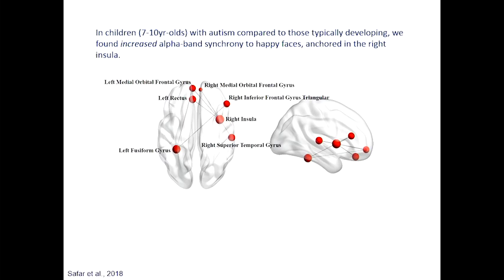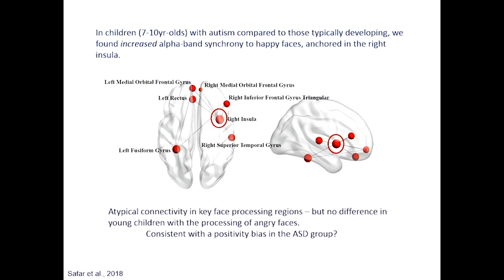In the 7-to-10-year-old children with autism, the right insula network is greatly, significantly increased — they're responding more to the happy faces than typically developing children. When children are very young, they respond more to happy faces until 4 to 6 years of age — it's called a positivity bias. We think the children with autism still have their positivity bias: they are not learning the emotions as fast, and so they're still processing the positive faces better than the negative faces.